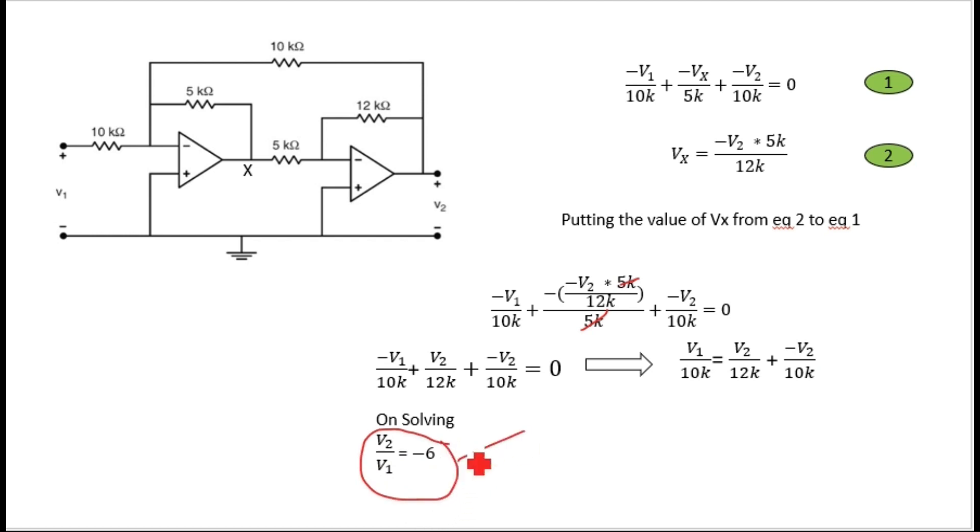V2 by V1 equals minus 6 volts. I hope guys you are able to understand this one. Please like and subscribe my channel. Thank you for watching.